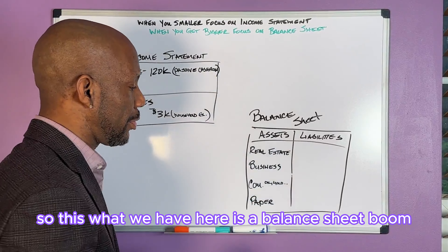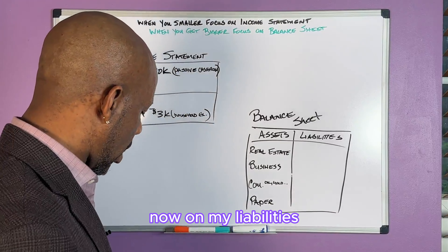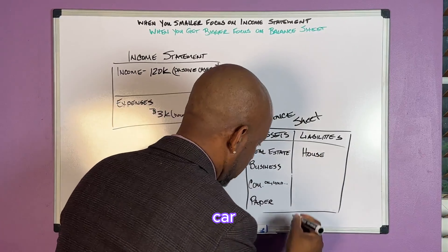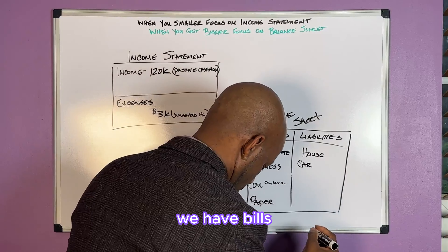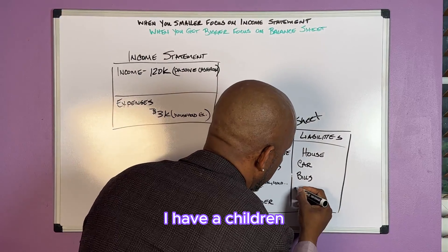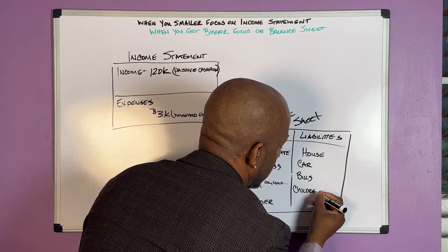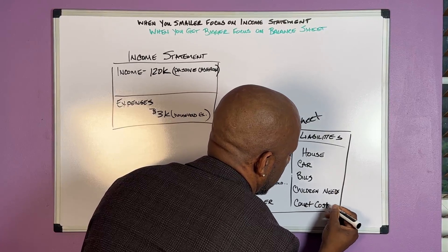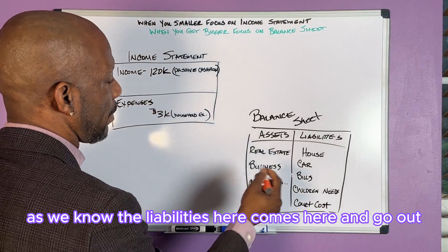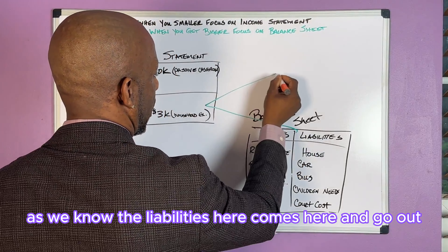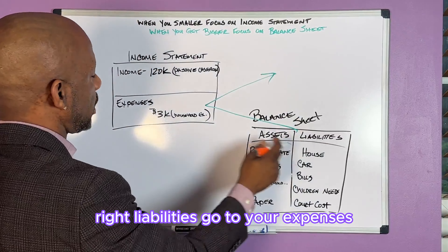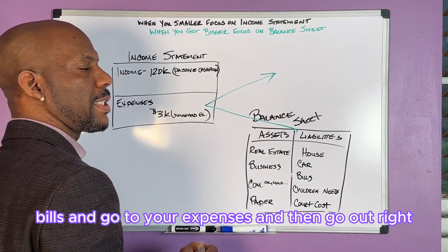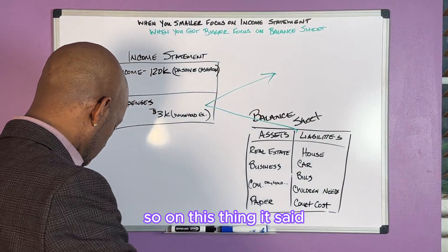So that's the balance sheet, and we have the income statement. On my liabilities I had: house note, car note, bills, children's needs, and court costs. Those liabilities come out of your expenses — house note, car note, bills all go to your expenses and then go out.